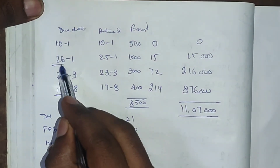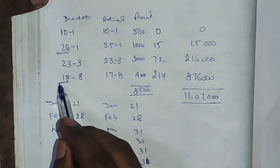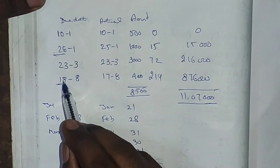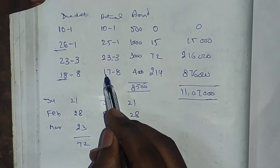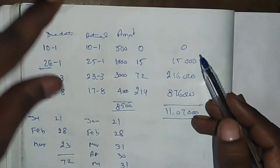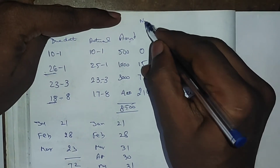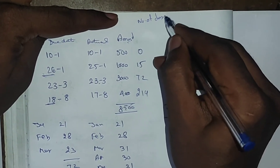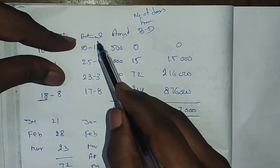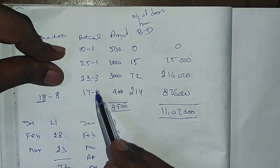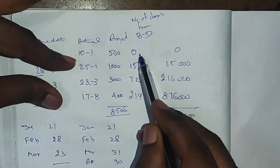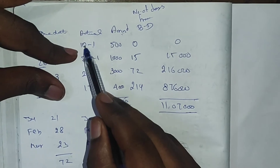Since 26th January is Republic Day and 18th August is a Sunday — both gazetted holidays — you take one day prior: 25th January and 17th August. The amounts are already noted. Now you have to calculate the number of days from the base date. The base date is nothing but the earliest date, which is 10th January.